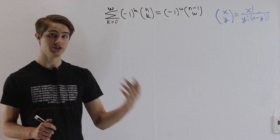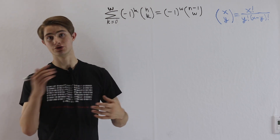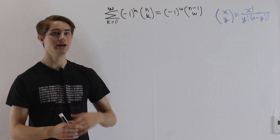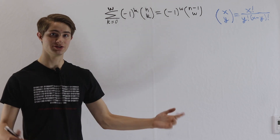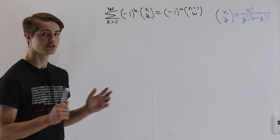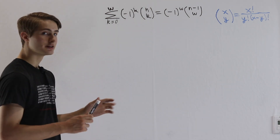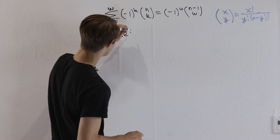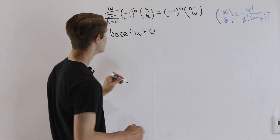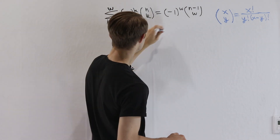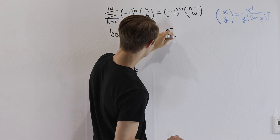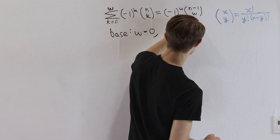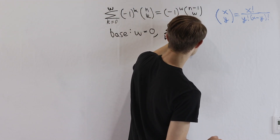That way, if we know it's true for 0, then it's also true for 1. If we know it's true for 1, then it's true for 2, then it's true for 3, and so on for every single integer — so then we prove the identity. Let's start out with the base case w equals 0, which means we want the sum from k equals 0 to 0 of negative 1 to the k times n choose k.